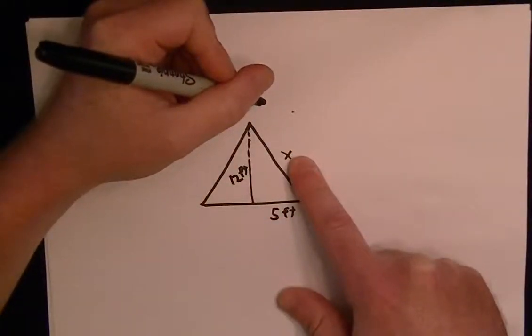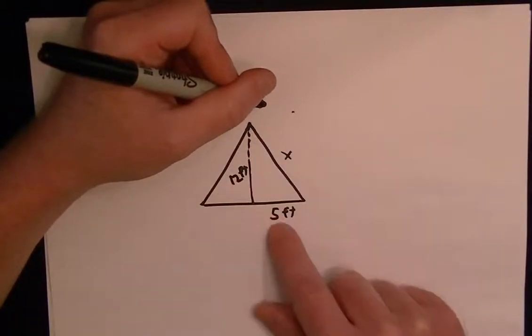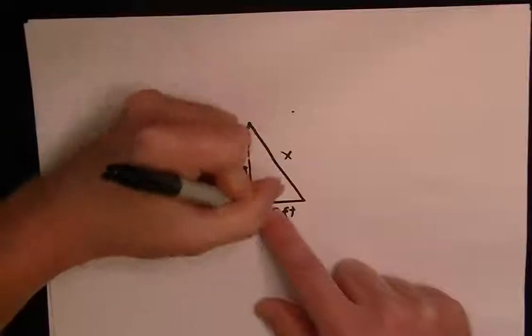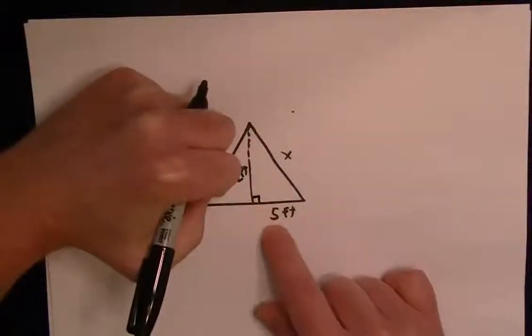They want to know what the length of side X is. The way to do this is to use the Pythagorean theorem. Here we've got a 90-degree angle intersection, so we can use Pythagoras's theorem.